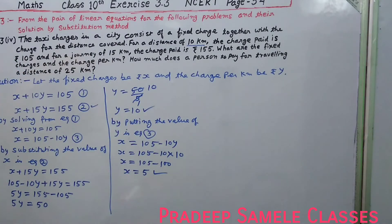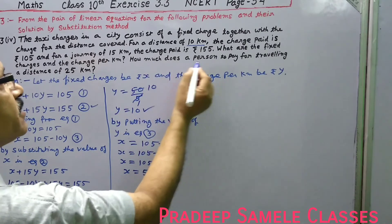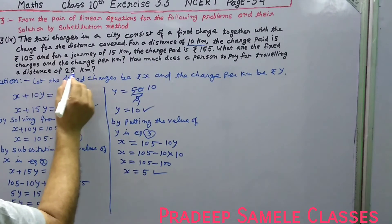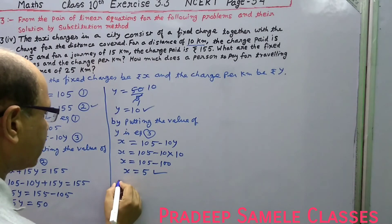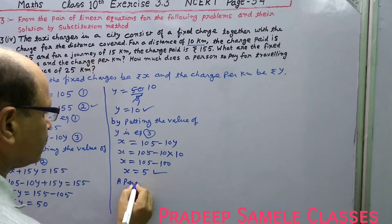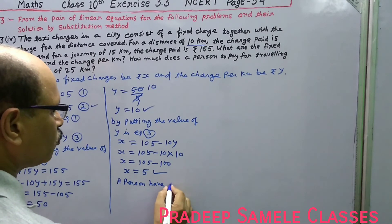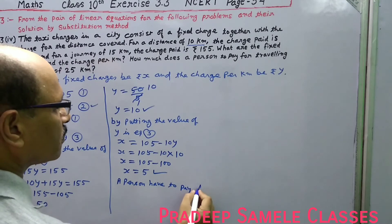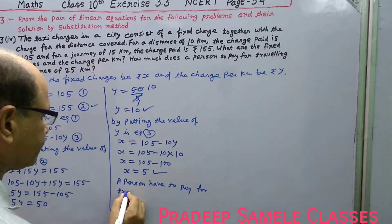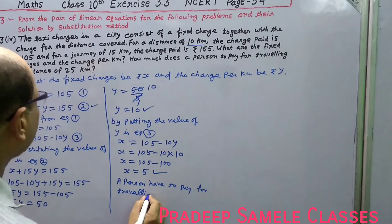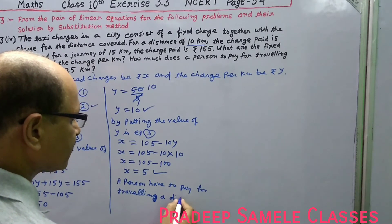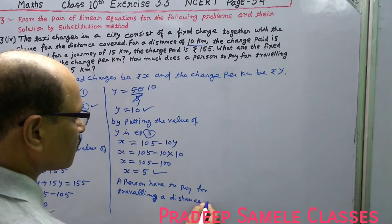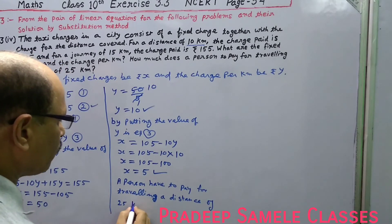Now for the second part: how much does a person pay for travelling a distance of 25 kilometres? For travelling a distance of 25 kilometres, we set up the expression using our found values.